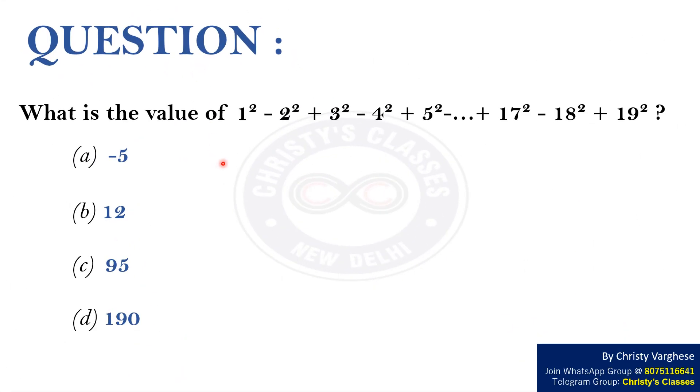Question. What is the value of 1 square minus 2 square plus 3 square minus 4 square plus 5 square and so on, continuing into 17 square minus 18 square plus 19 square?